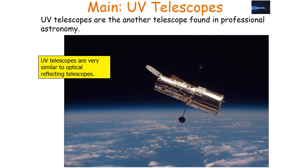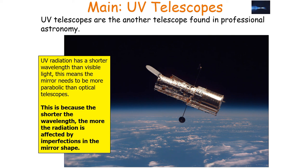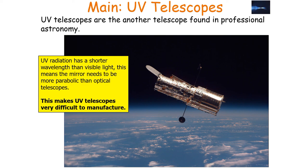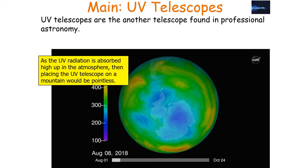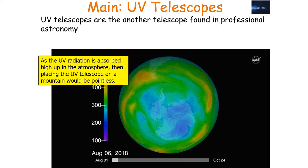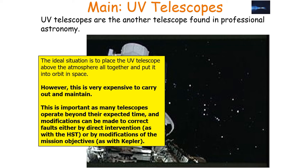UV telescopes are also similar to optical reflecting telescopes, using a primary concave mirror and a CCD detector. UV radiation has a shorter wavelength than visible light, so the mirror must be more precisely parabolic, making UV telescopes very difficult to manufacture. UV is absorbed by the ozone layer so UV telescopes should ideally be placed in space. High-altitude weather balloons or aeroplanes can partially overcome this, but space placement is ideal — though very expensive to carry out and maintain.